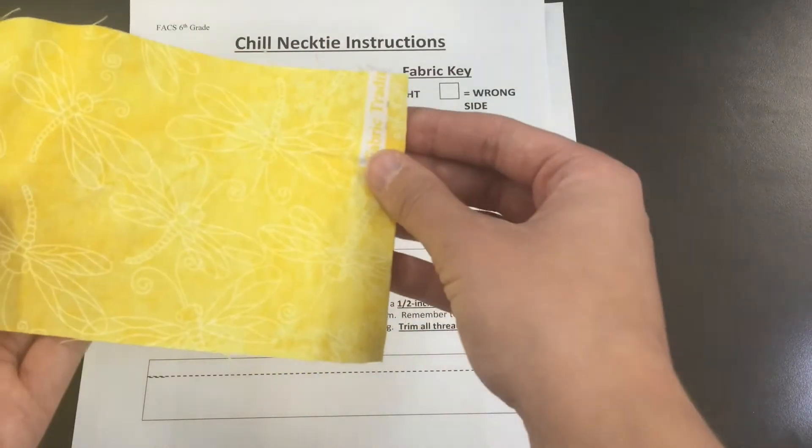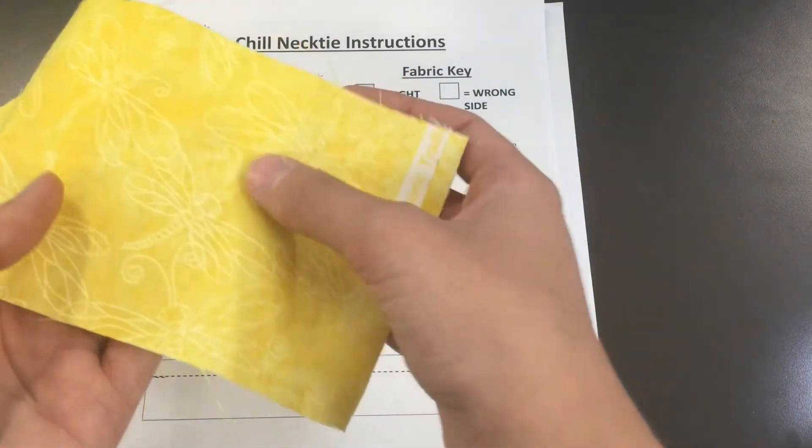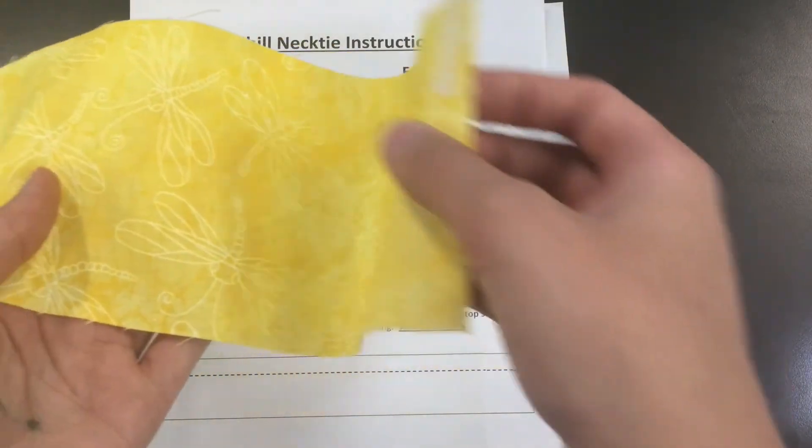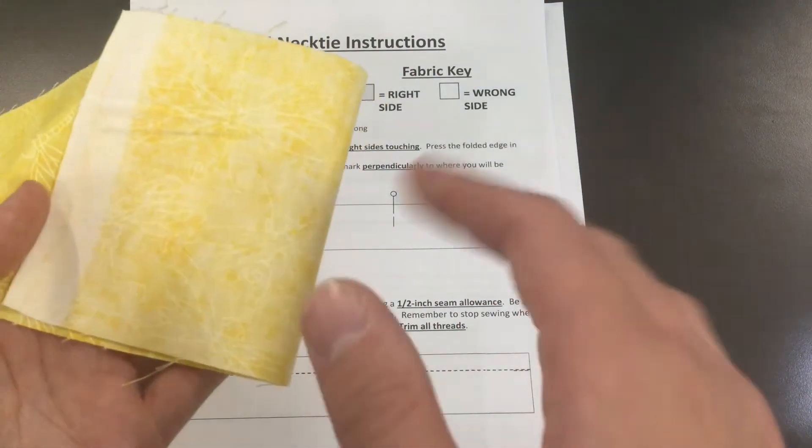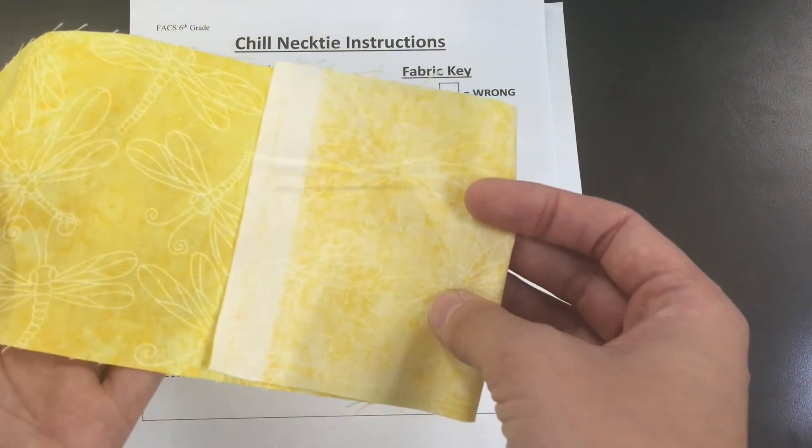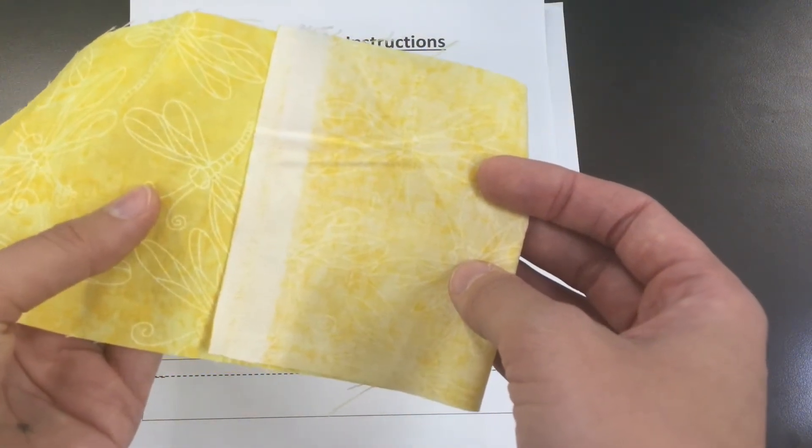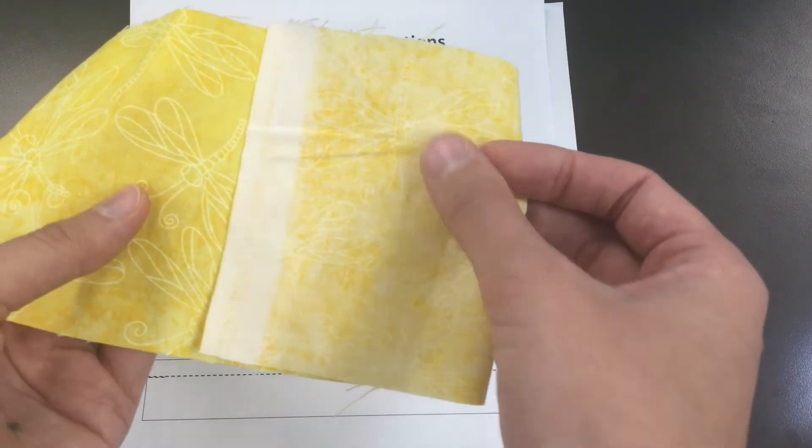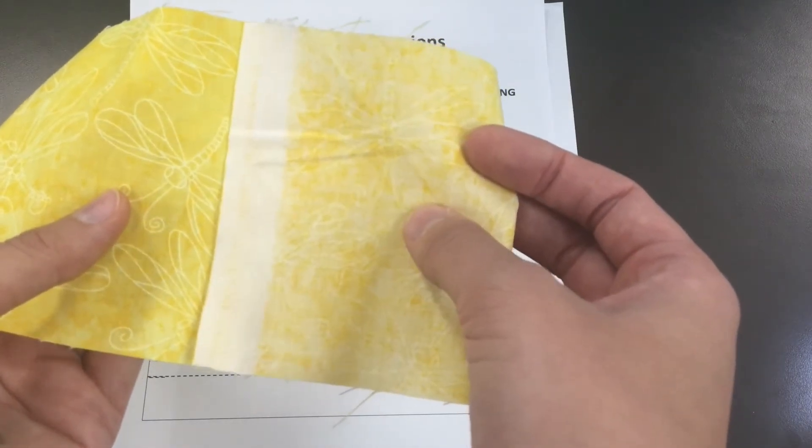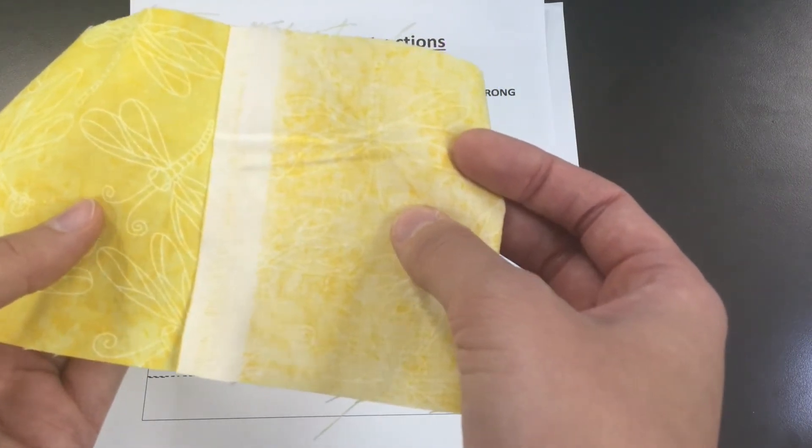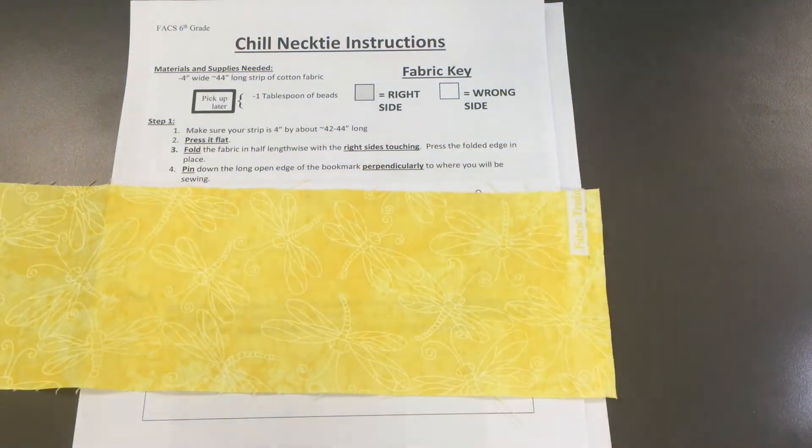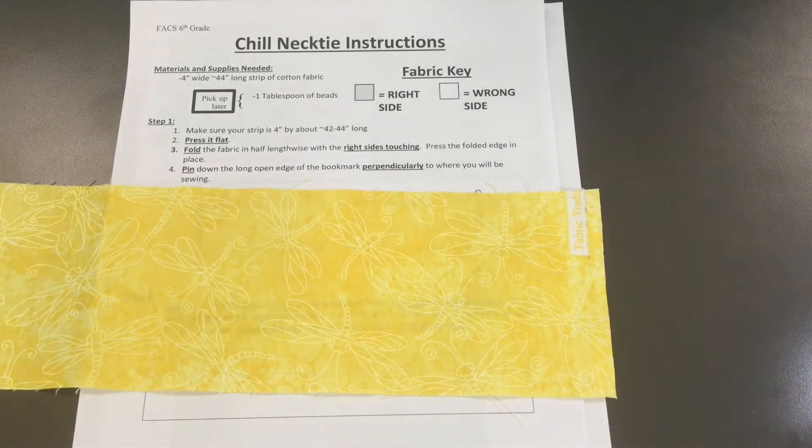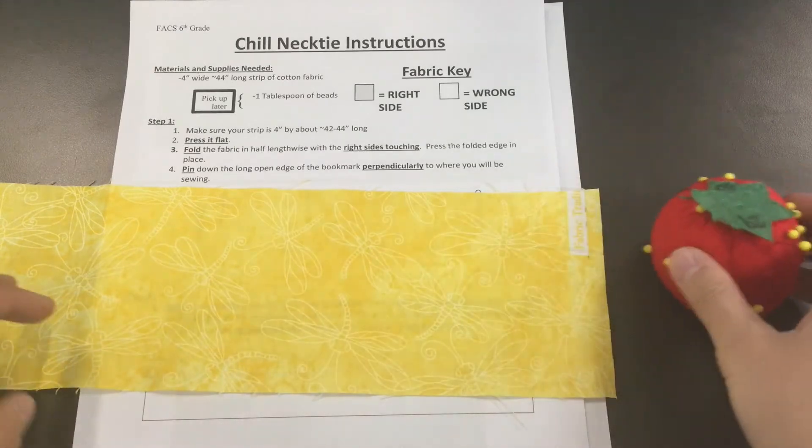So what you're going to do is look at your fabric. You could go, 'Oh, those are pretty dragonflies on yellow.' Then you look at the other side—'Well, I can't really tell those are dragonflies on yellow anymore. Kind of, but it's not near as clear and easy to see.' This is the right side, the side that we want to see in the end. This is the wrong side—it will be on the inside where no one can see it. If you have a solid colored fabric, you probably don't need to worry about that too much. Okay, so you could iron it in half with the right sides touching, or you can go straight to pinning.